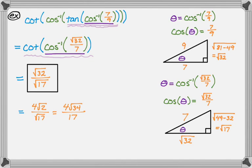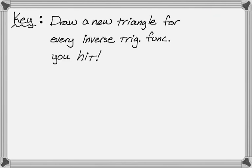So the one really key thing when you're doing these, draw a new triangle for every inverse trig function that you hit, because every inverse trig function is a new angle. And the sides relative to that angle could change position, could change values. So every new inverse trig function you hit, draw a brand new triangle. All right, I hope you found this helpful, and good luck with that.